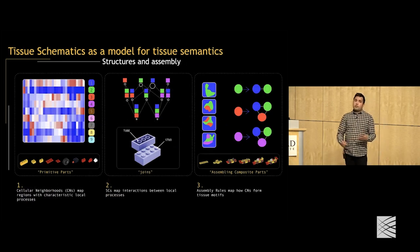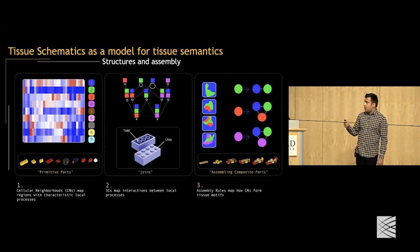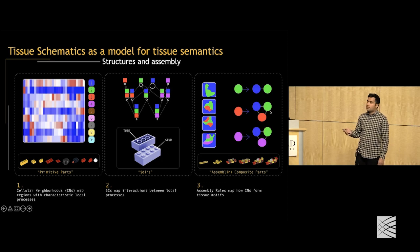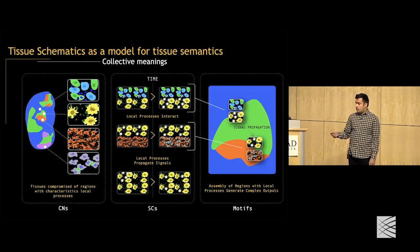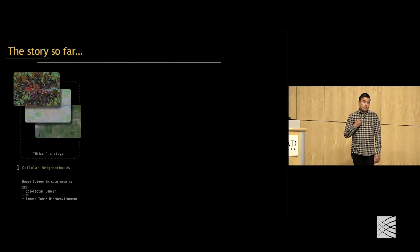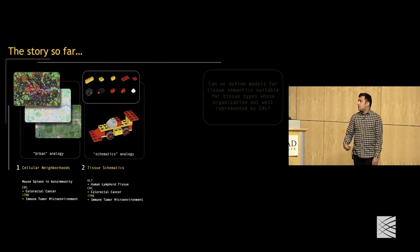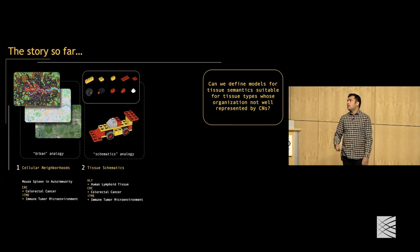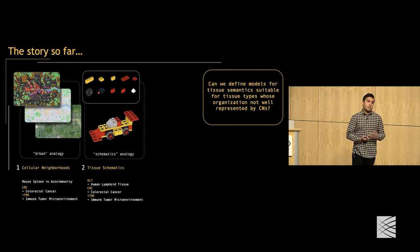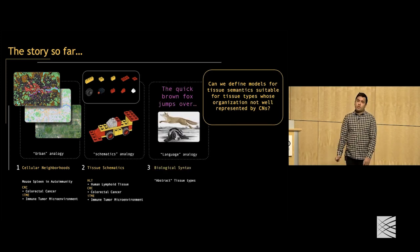To recap how tissue schematics fits into this model for tissue semantics: we have the three ingredients — the parts and how they join to form composite parts (described with neighborhoods, spatial contexts, and motifs) — and these structures have a meaning expressed in terms of biological models with characteristic local processes and signal propagation. We had these two different models, and the starting point for the next approach is: can we define models for tissue semantics suitable for tissue types whose organization isn't well described by cellular neighborhoods, while still reasoning about them in an automated way?